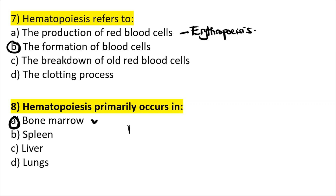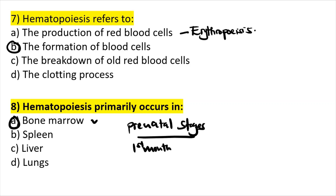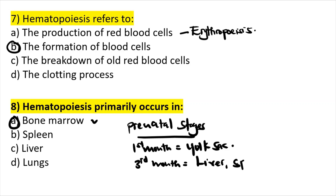During prenatal stages — stages before you are born — in the first month of development, the yolk sac is responsible for making blood cells. In the third month, the liver takes over, and even the spleen. Then in the fourth month, the bone marrow comes in and takes the chief production of blood cells.